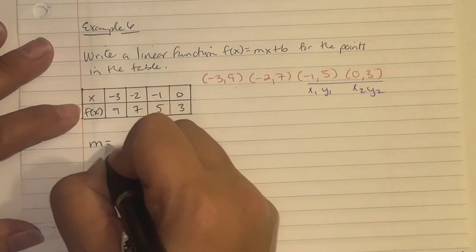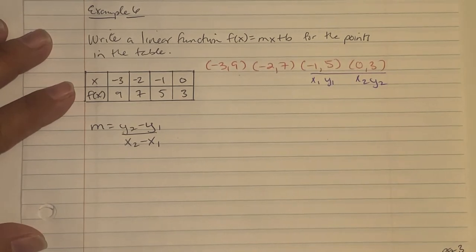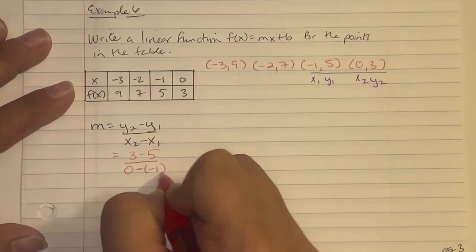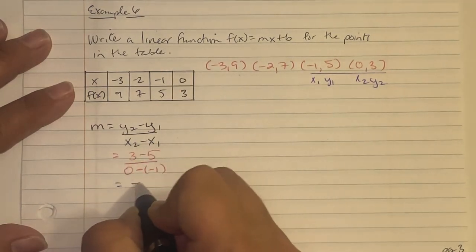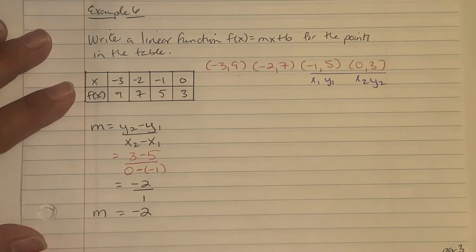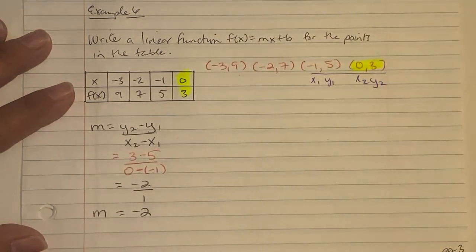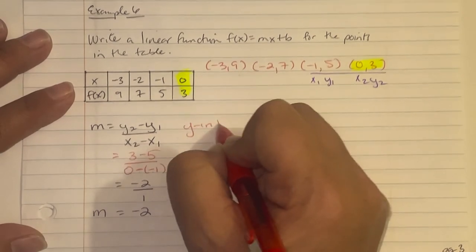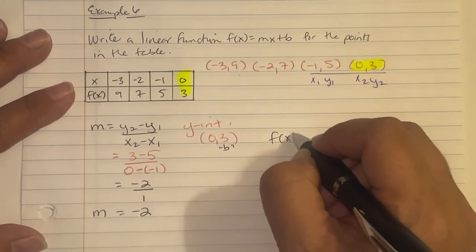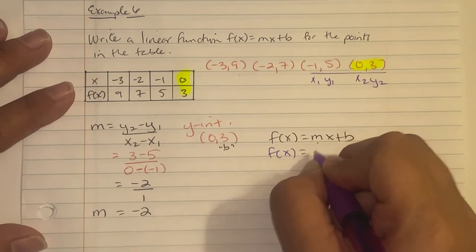The ordered pair (0, 3) in the table is also the y-intercept, so b equals 3. Writing the function: f(x) equals mx plus b, substituting gives f(x) equals -2x plus 3.